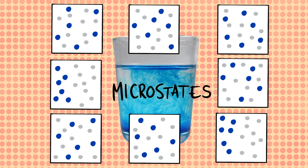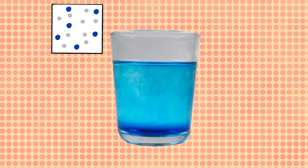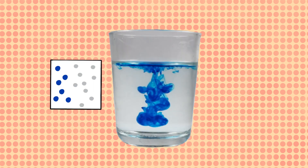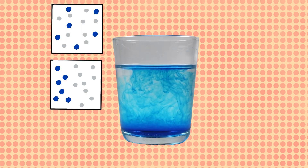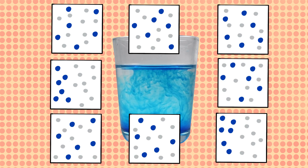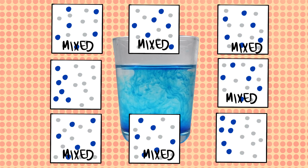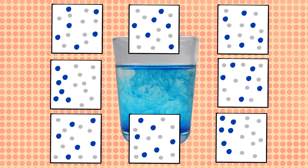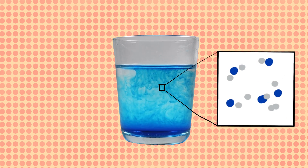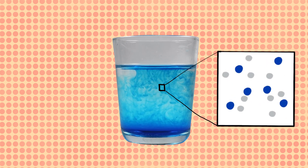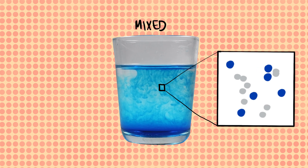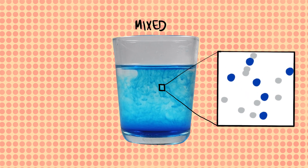Some microstates correspond to a very different overall state of the entire glass. For example, this microstate corresponds to a mixed state, while this other one corresponds to an unmixed state. Both microstates are equally likely. However, there are many more microstates that correspond to a mixed state than to an unmixed state. This means that as particles rearrange and explore all the microstates, the whole glass is much more likely to be in a mixed, high-entropy state.